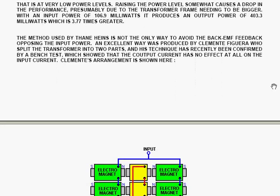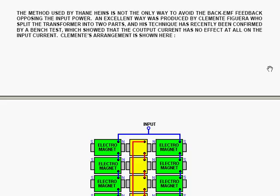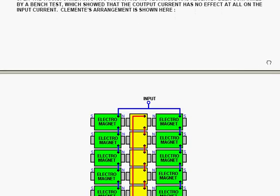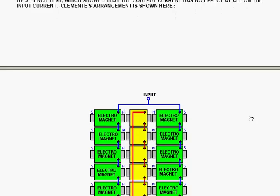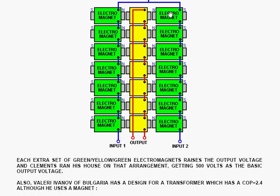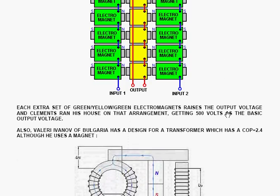The method used by Thane Hines is not the only way to avoid back EMF feedback opposing the input power. An excellent way was produced by Clement Figura, who split the transformer into two parts. And his technique has recently been confirmed by a bench test which showed that the output current has no effect at all on the input current. This is Clement Figura's arrangement here. You've got seven input electromagnets on this side, seven more input electromagnets on that side, and they're fed alternately with different levels of current. Every single set of green-yellow-green raises the output voltage.